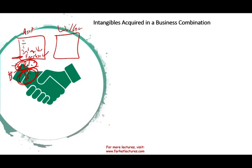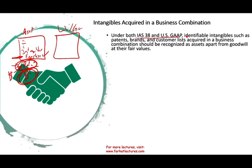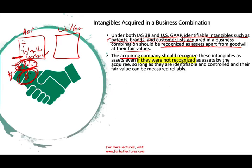I'll show you an example shortly — when VW, Volkswagen, bought Porsche. Under IAS 38 and US GAAP, identifiable intangibles such as patents, brands, and customer lists acquired in a business combination should be recognized as assets apart from goodwill at their fair value. You buy assets including patents, brands, customer lists — all identifiable intangible assets. You list them at fair market value on your books.